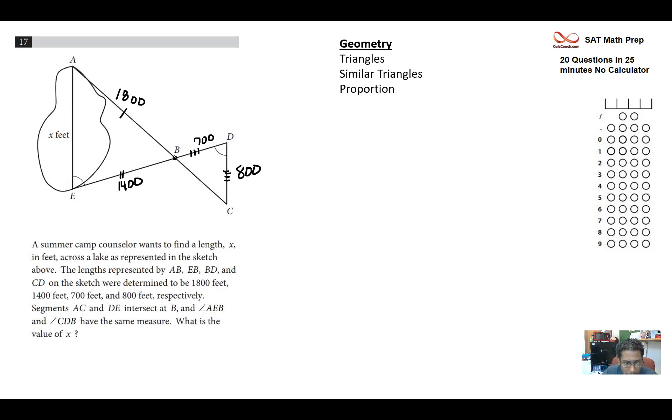These guys intersect in the point B, and these angles are marked off as being equal. They're asking us for the value of x, which is going to be this distance in the left triangle there, AE. What's hidden behind the scenes is the fact that we have what's called similar triangles, where if all three angles in the triangle are the same, then they're similar.